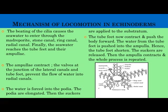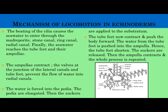Coming to the mechanism of locomotion in echinoderms: the water vascular canals are lined inside by cilia, which beat in synchronization. As a result, seawater surrounding the echinoderm enters through the madreporite, then passes through the stone canals, ring canals, radial canals, and finally reaches the tube feet and their ampullae. The ampullae contract, and the valves at the junction of the lateral canals and tube feet prevent backflow of water into the radial canals. Water is then forced into the podia, causing the podia to elongate.